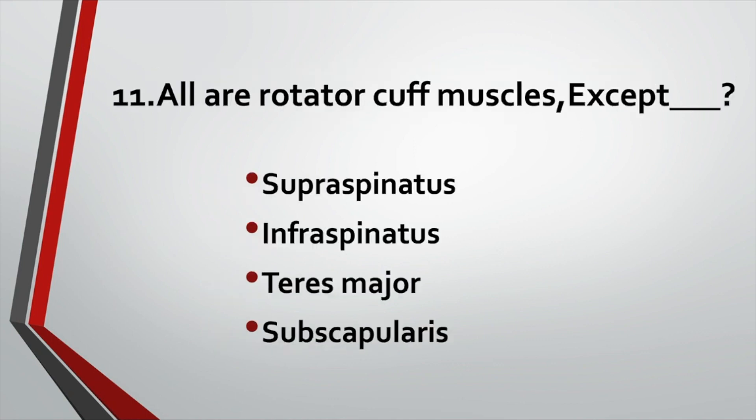All are rotator cuff muscles — which is NOT? Option A: Supraspinatus. Option B: Infraspinatus. Option C: Teres major. Option D: Subscapularis. Answer: Option C, Teres major.